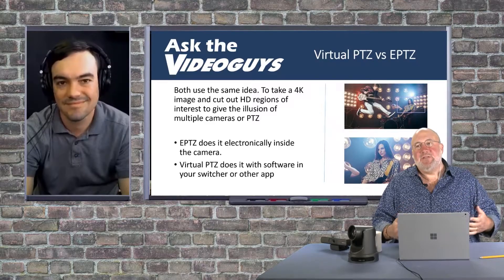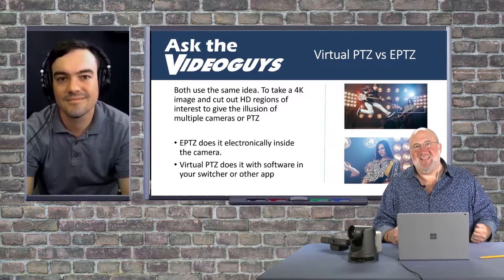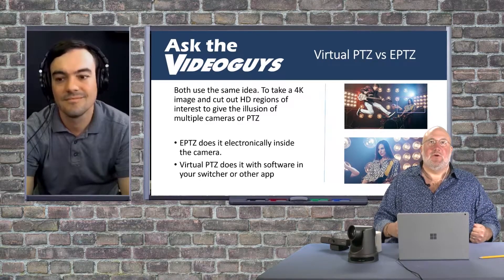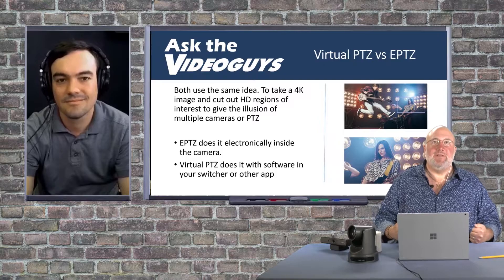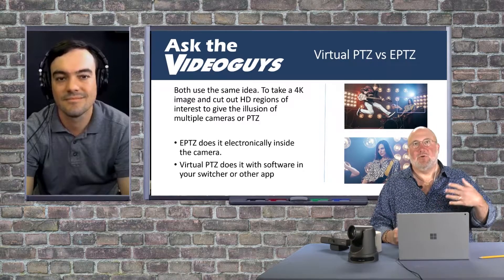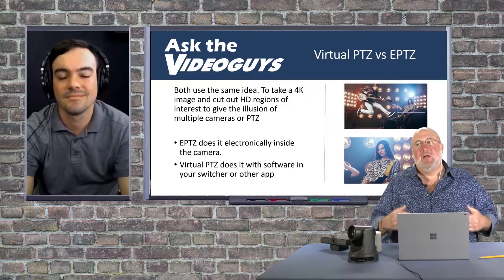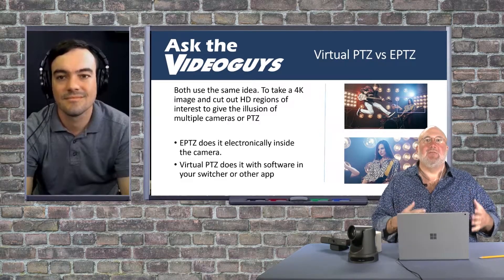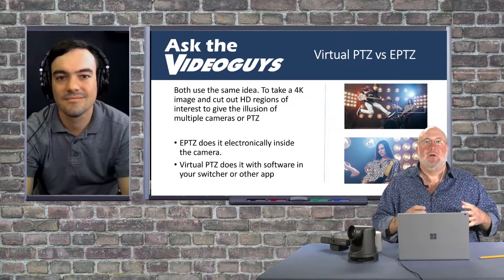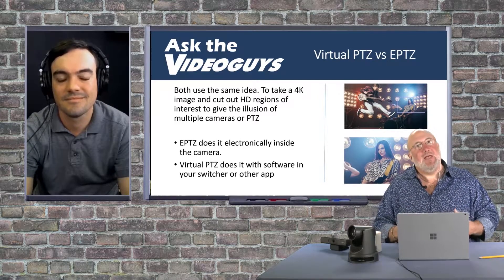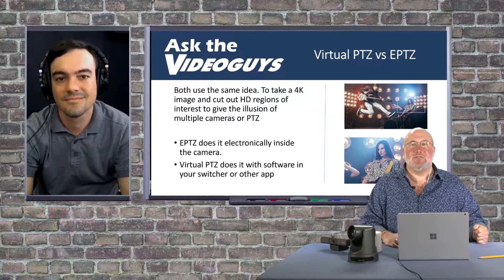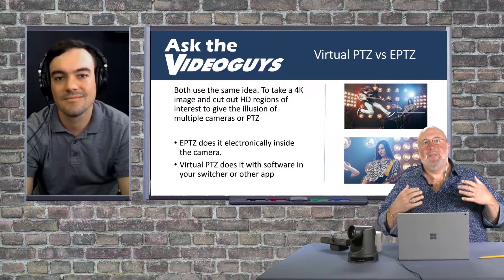One of the things about virtual PTZ is it takes a lot of horsepower to do that. So if you're doing virtual PTZ on a TriCaster, VMIX, or Wirecast, you're going to be giving up a lot of that CPU and GPU to do it. That's one of the advantages of ePTZ — because it's in the camera.